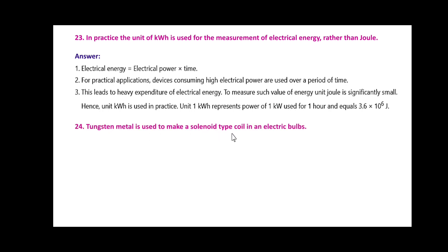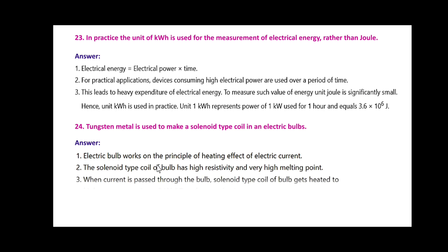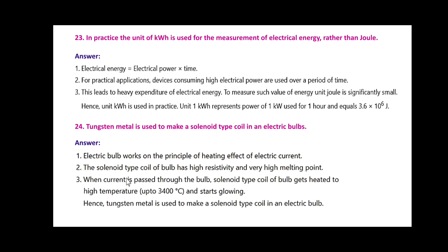Tungsten metal is used to make a solenoid-type coil in an electric bulb. An electric bulb works on the principle of heating effect of electric current. The solenoid-type coil of the bulb has high resistivity and a very high melting point. When current is passed through the bulb, the coil gets heated to a high temperature, up to 3400 degrees Celsius, and starts glowing. Hence, tungsten metal is used to make the solenoid-type coil in an electric bulb.